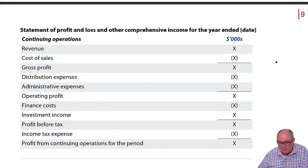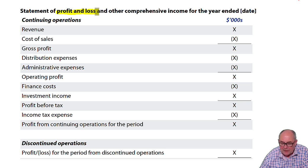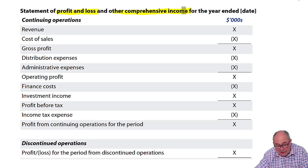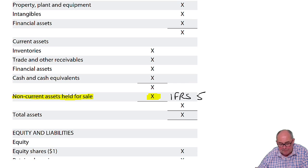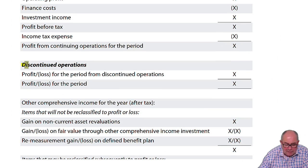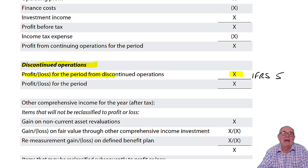On the following page, you've got the two performance statements. Don't forget there are two performance statements: the profit and loss and then other comprehensive income. In the profit and loss, the only thing I'd point out is the equivalent of assets held for sale. In the profit and loss, remember, you have to isolate the profits of any discontinuances. Again, that rule is from IFRS 5.